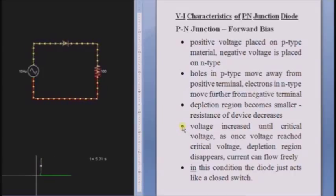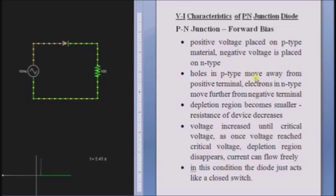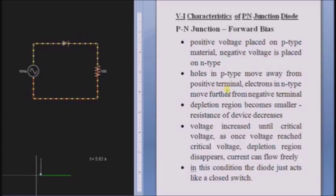Connect the positive voltage to the P-type material of the diode and the negative voltage to the N-type of the diode. This connection is known as forward bias connection. The holes in the P-type move away from the positive terminal, as we have connected the positive terminal to the P-type. The holes in the P-type will be repelled in the opposite direction from the positive terminal.